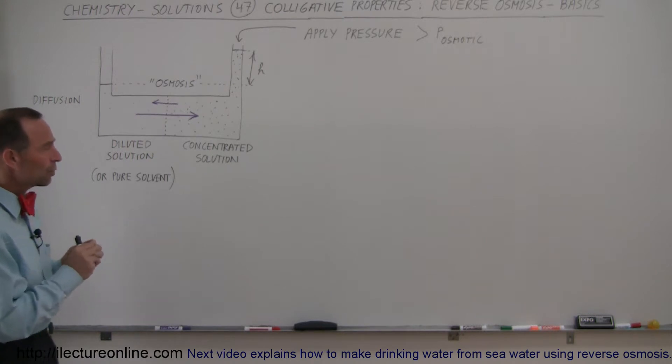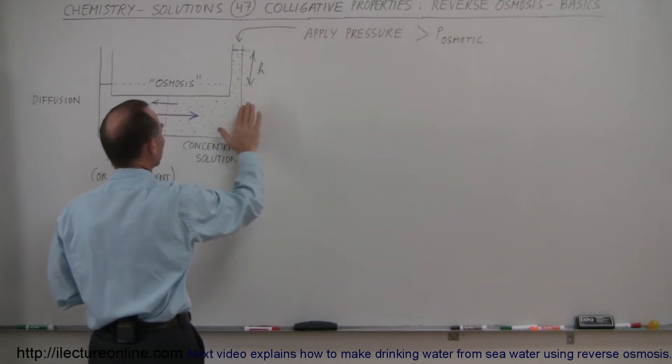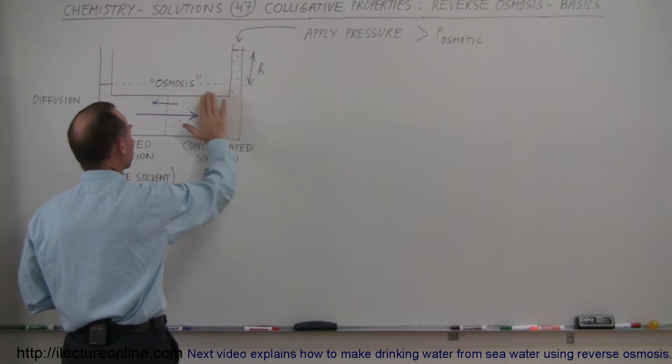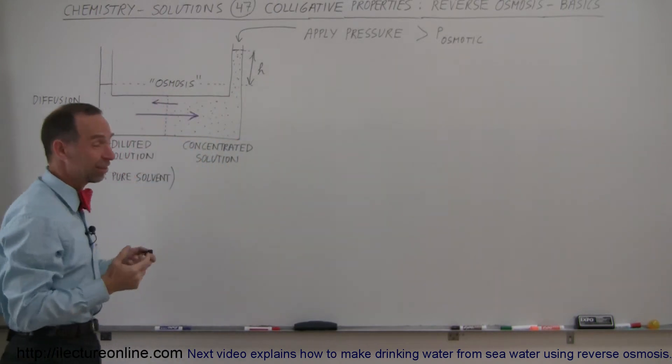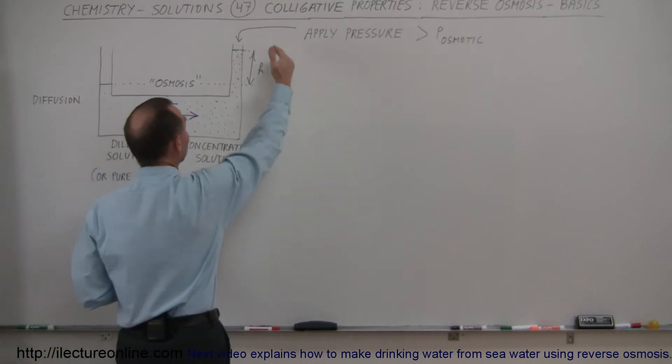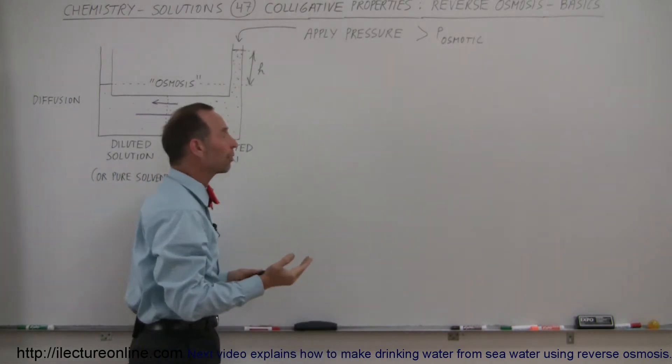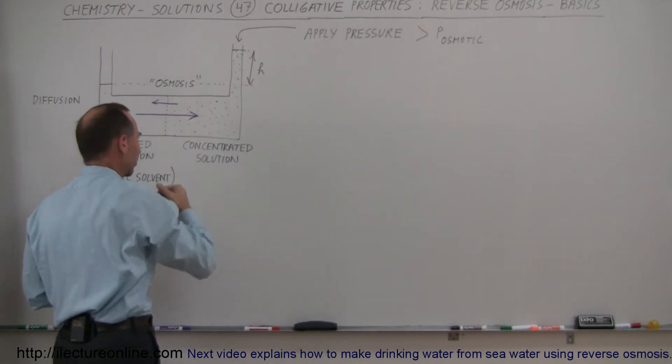And in this case, we're going to see why would we want to try to reverse the osmosis. In other words, if we apply a pressure on the side where the solution is more concentrated than on the other side where the solution is less concentrated, or we have a pure solvent, by applying sufficient pressure, at least as great as or greater than the osmotic pressure, you will actually reverse this process.